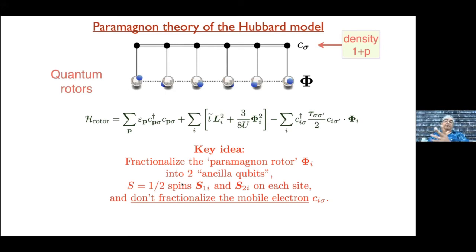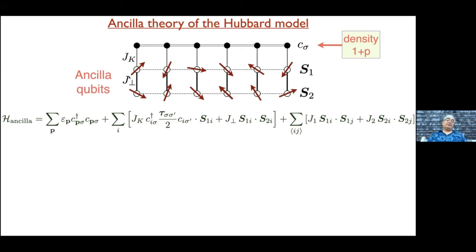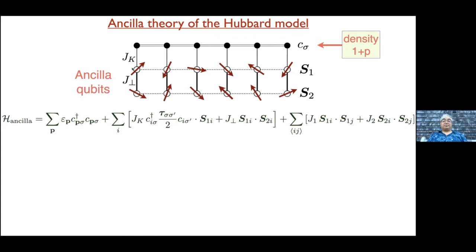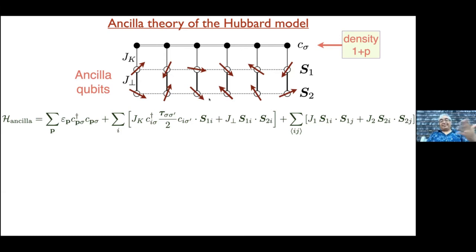By representing two spin-1/2s with coupling J_⊥, and calling the Kondo coupling J_k, this is formally an exact representation of the Hubbard model — I have the original free electrons coupled by a Kondo coupling to a spin ladder. Crucially it has to be a spin ladder, not just one layer of spins, because only then do you get this mapping to the rotor model derivable from the Hubbard model.